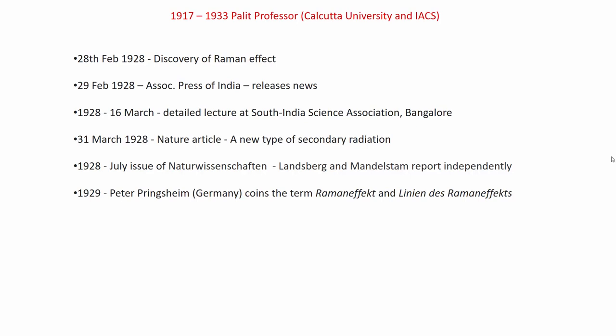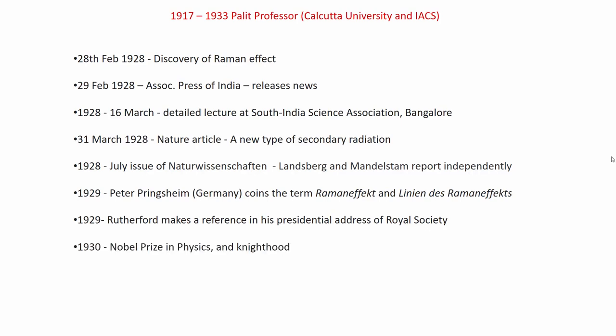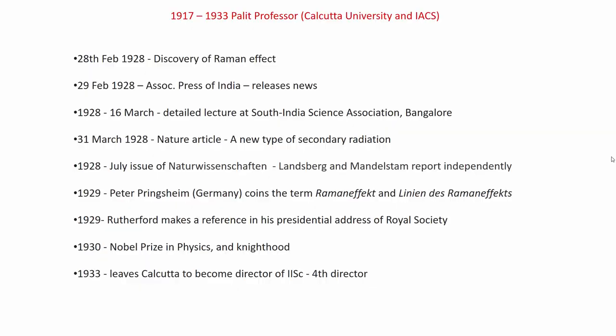In 1929, Peter in Germany coined the term Raman effect — the first time it was explicitly mentioned in the literature. Also in 1929, Rutherford, one of the most influential physicists in the world, made reference to the Raman effect in his presidential address to the Royal Society. Within a year Raman received the Nobel Prize in Physics. Raman had actually booked his tickets to Stockholm much earlier than the announcement date — such was his confidence. In the same year he was also knighted.